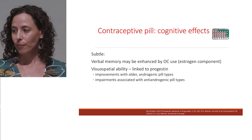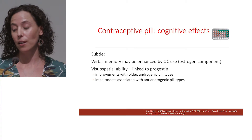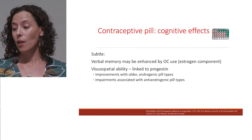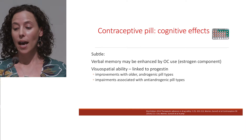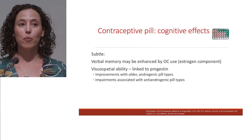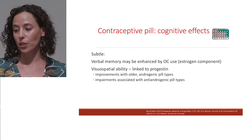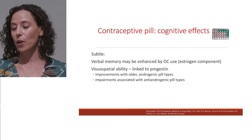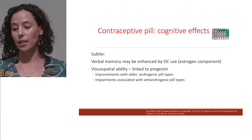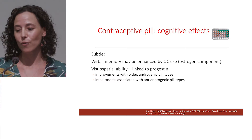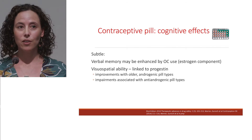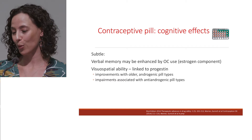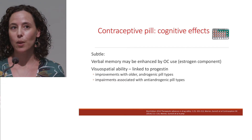Moving on to the contraceptive pill, cognitive studies have suggested that verbal memory might be enhanced by potentially the oestrogen component of the pill, and visual-spatial abilities seem to be linked to the type of progestin. Oral contraceptive pills contain an oestrogen and a progestin — a synthetic form of progesterone. Visual-spatial skills tend to improve with progestins that have androgenic effects but tend to be impaired by newer progestins with anti-androgenic effects. So there might be some cognitive effects associated with the pill, though they're pretty subtle.